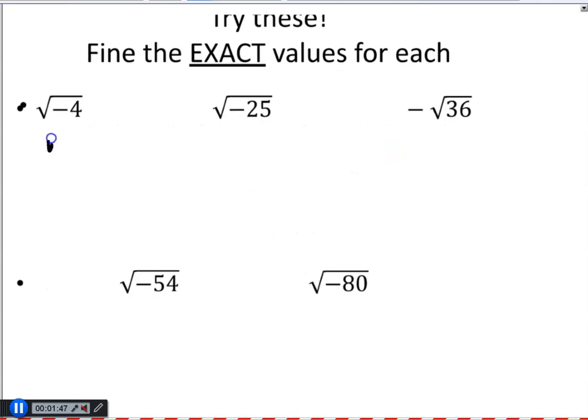So, if I rewrote this as negative 1 times 4, that's negative 4. This negative 1 is going to come out as an i. And then, the square root of 4 is 2.